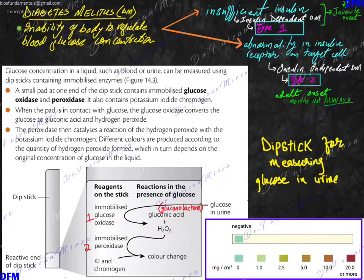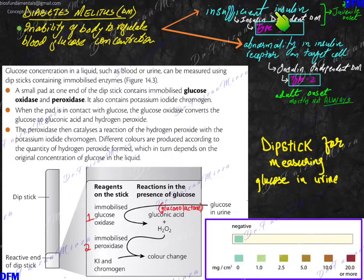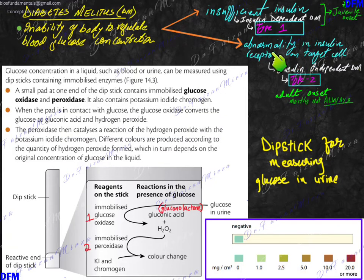Diabetes mellitus is the inability of the body to regulate blood glucose concentration. This condition could occur either because there is insufficient insulin, or because the insulin is sufficient but the receptor for insulin is not there.